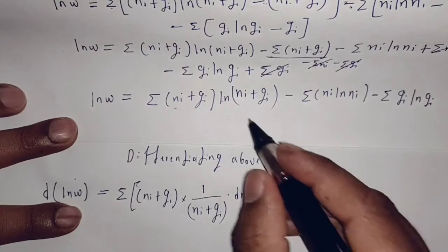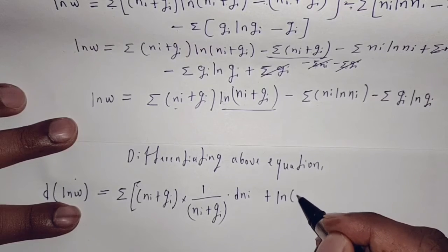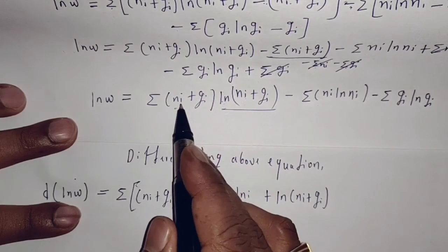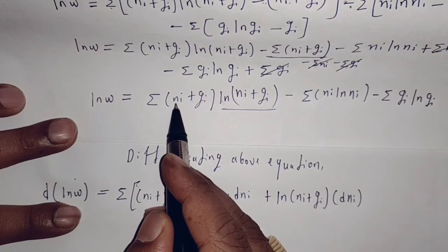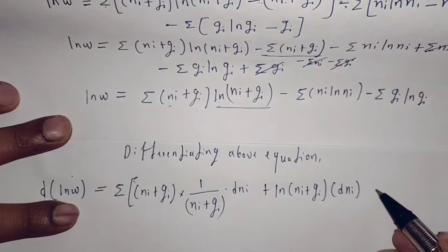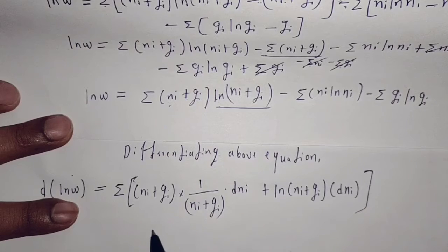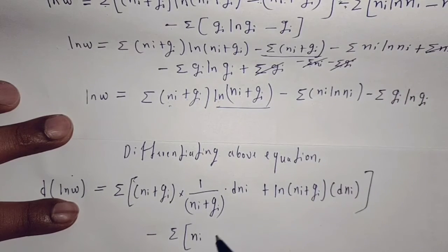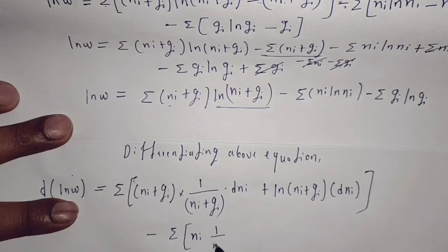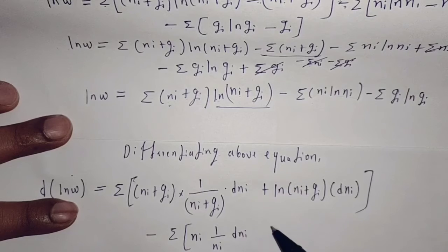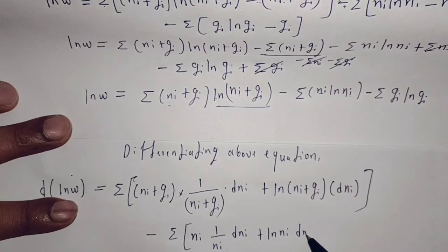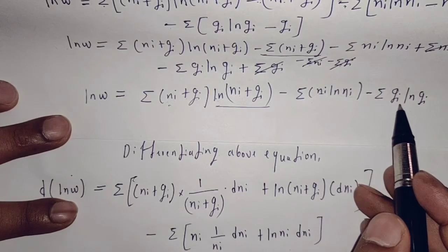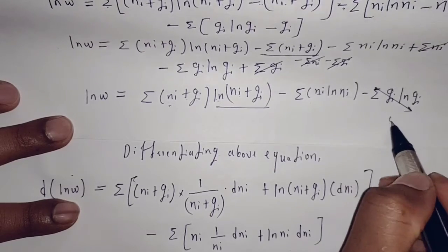Then minus summation: applying the product rule to ni·ln(ni), keeping ni as it is and differentiating ln(ni) gives (1/ni)·d(ni), plus keeping ln(ni) as it is and differentiating ni gives ln(ni)·d(ni). The differentiation of gi·ln(gi) is 0 because it is constant.